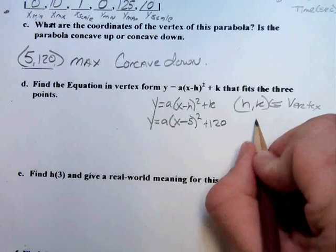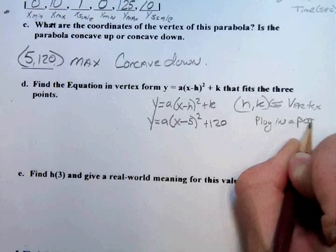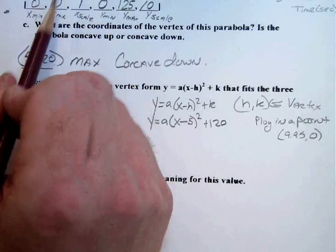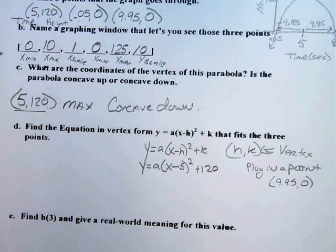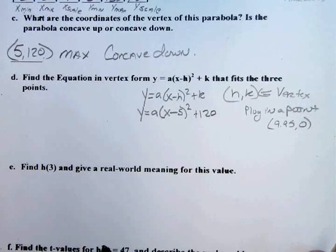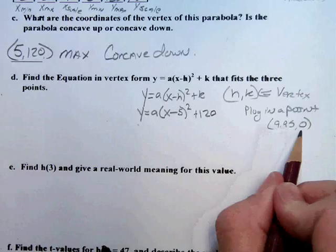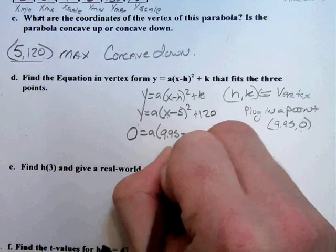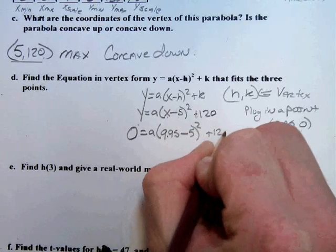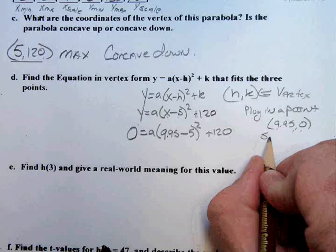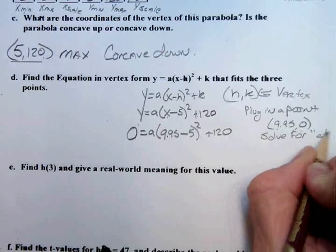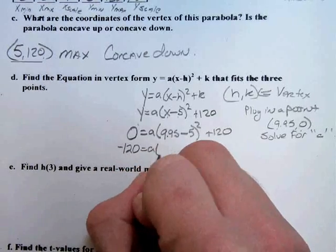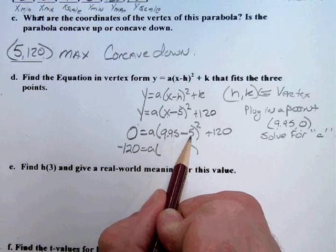Let's go ahead, the second thing we would do is plug in a point. So, I'm going to plug in this 9.95, 0. You could also use point 0.05 and 0. Both of them should give you the exact same answer or relatively close to the exact same answer. So, let's plug this in. We know that the y value is going to be 0 equals a times 9.95 minus 5 squared plus 120. So, we've plugged in our point. Now, what we need to do is solve for a. So I'm going to get rid of that positive 120 with a negative 120.